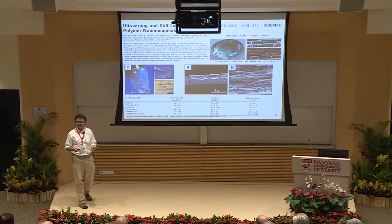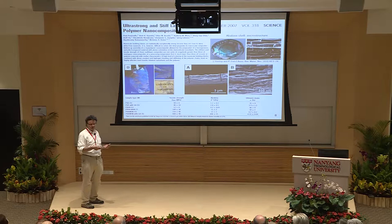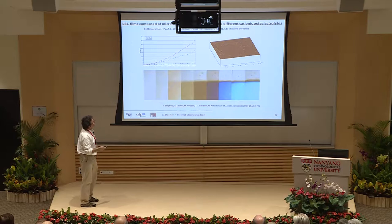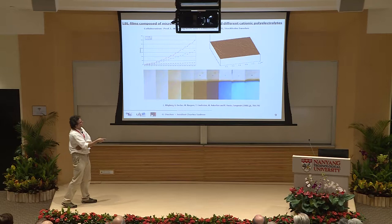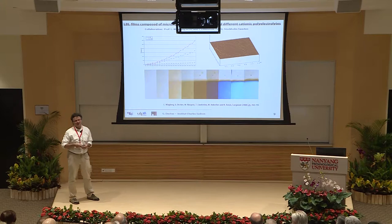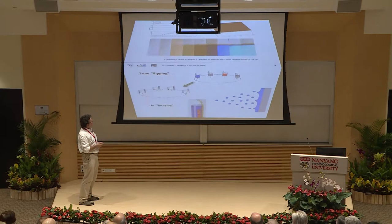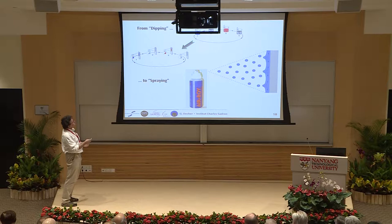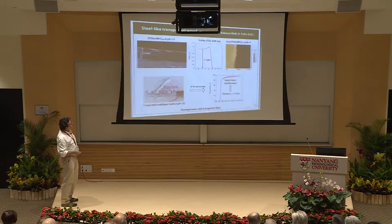Around 2008 we started with two colleagues from Sweden — Lars Wågberg at KTH and Tom Lindström at Innventia in Stockholm — to make multilayer films where one component is nanocellulose. The nanocellulose is charged and makes beautiful films. We started covering larger surfaces by spraying, which lets you reach really huge surface areas and deposit very well instead of dipping.